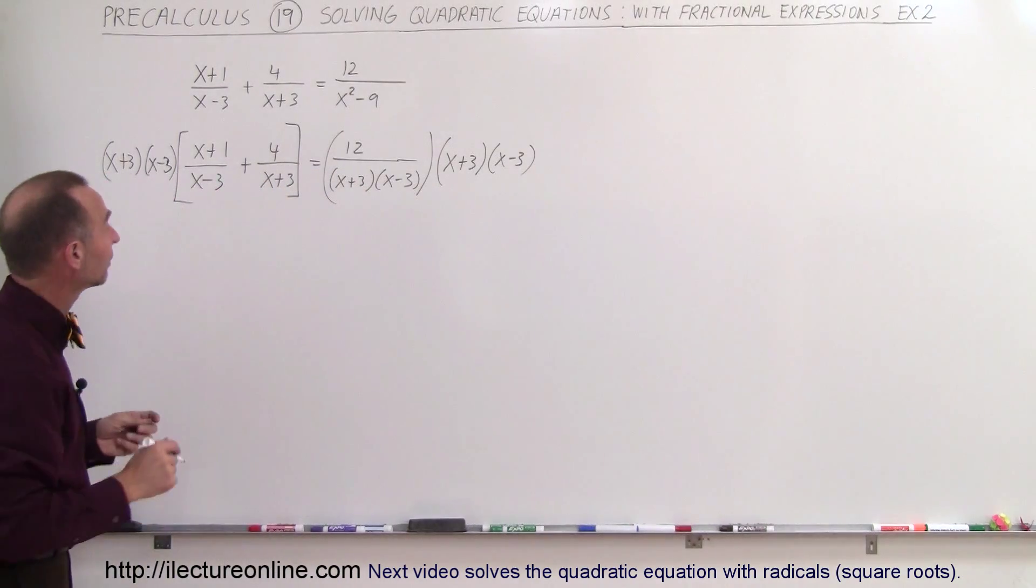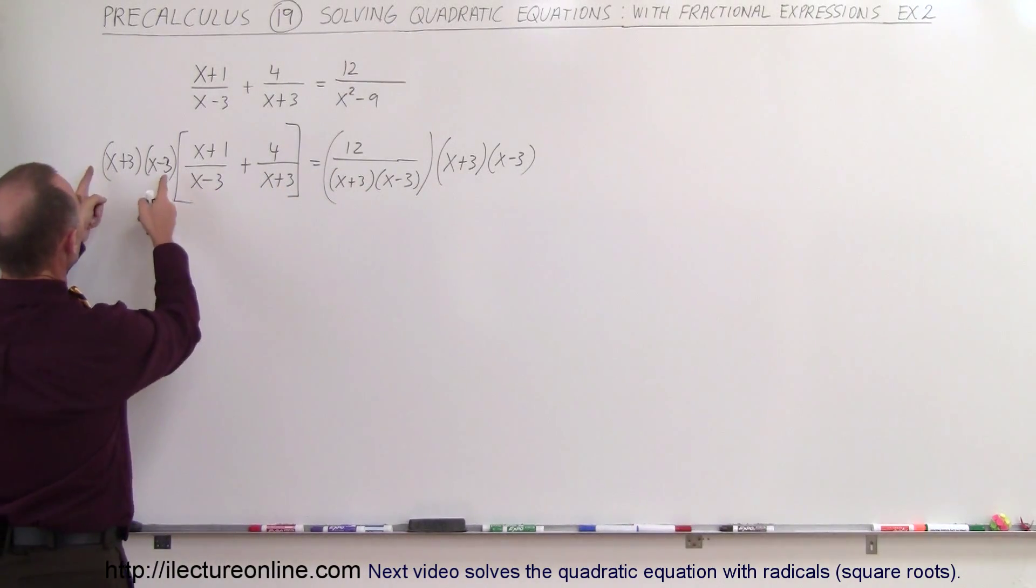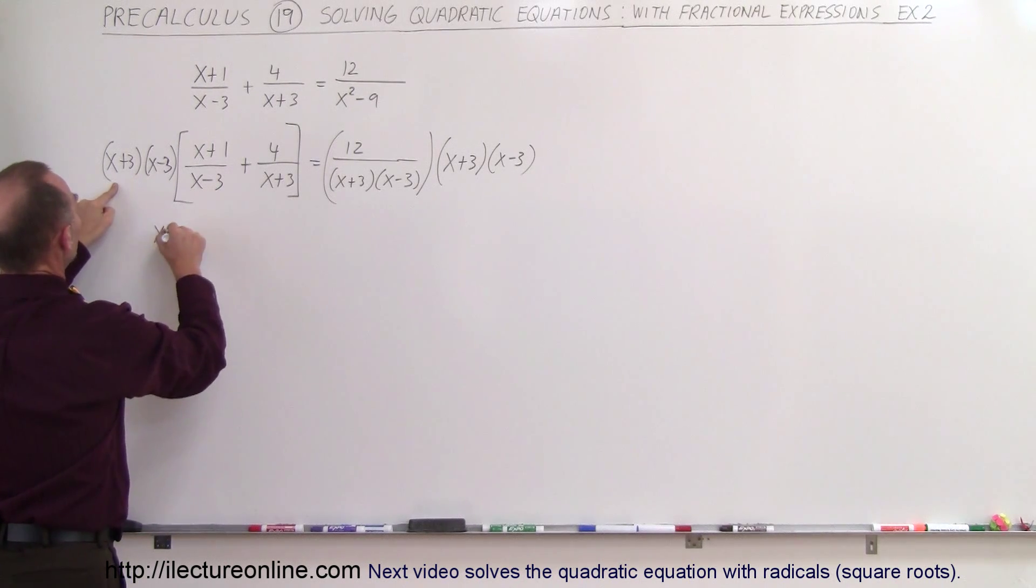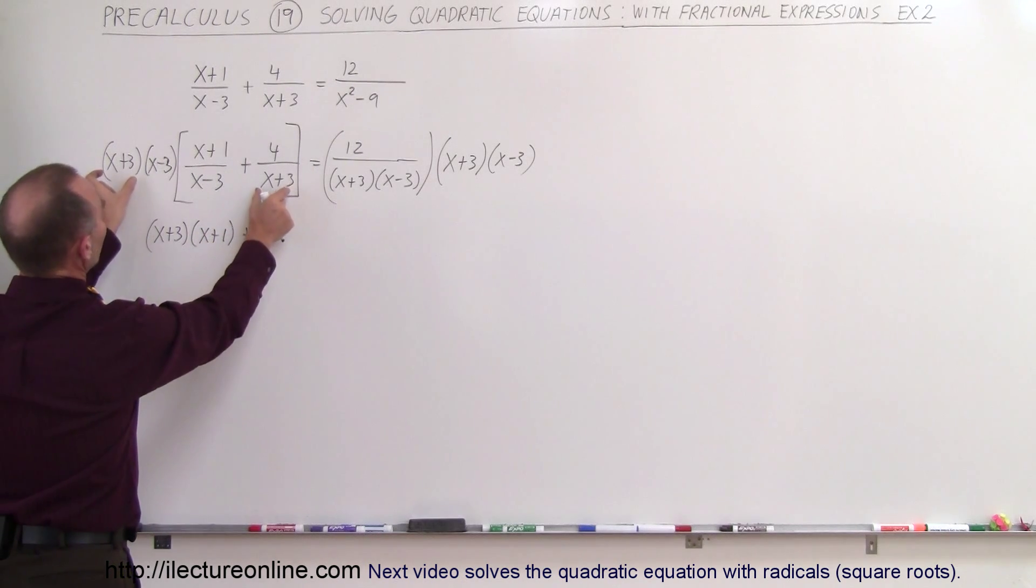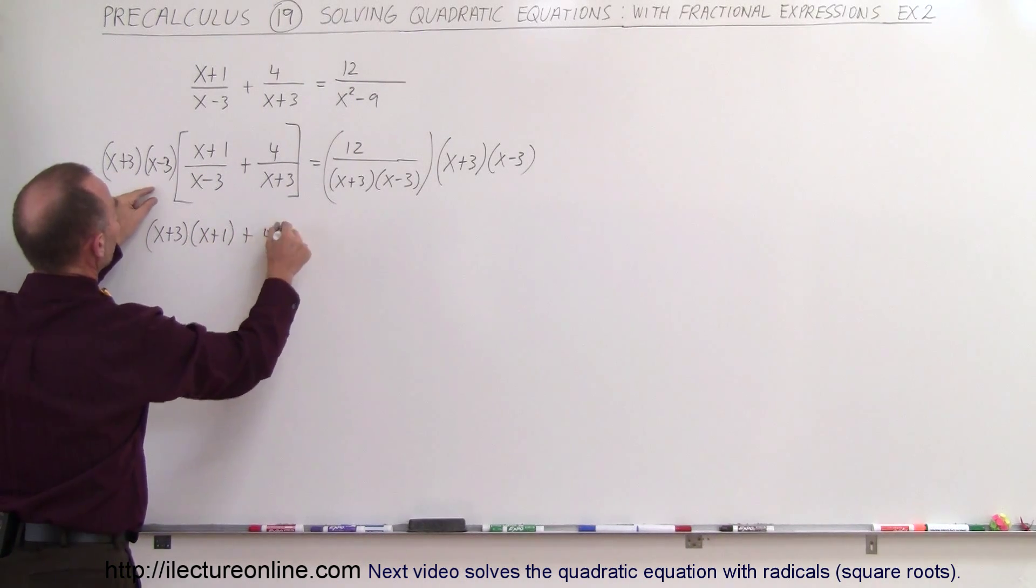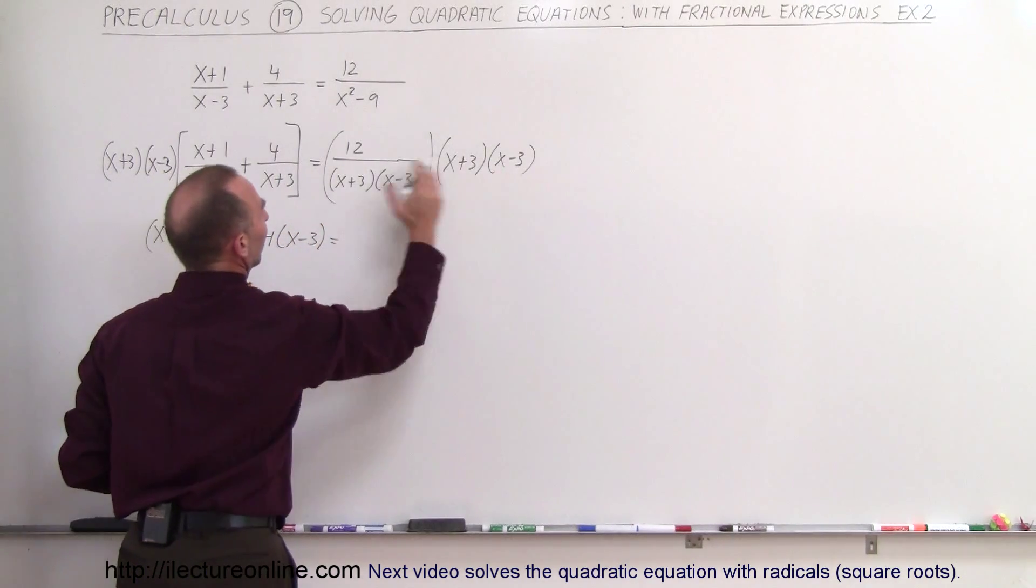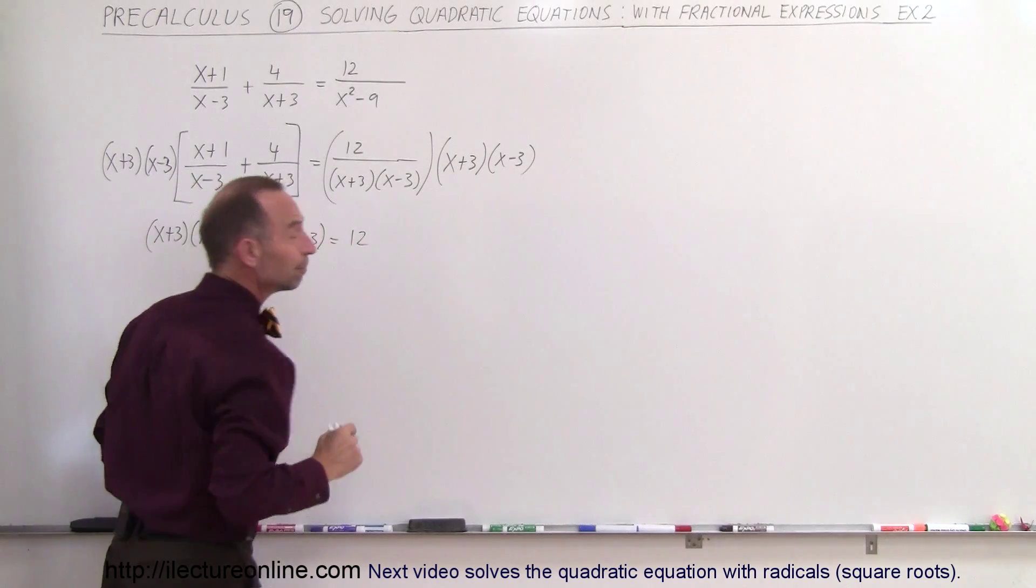What does that look like? Well, here we multiply this times this, the x minus 3's cancel out, so we're left with an x plus 3 times an x plus 1. Plus, here we see that the x plus 3's cancel out, so we're left with a 4 times x minus 3. And on the right side, we see that this cancels out the denominator, we're left with 12.